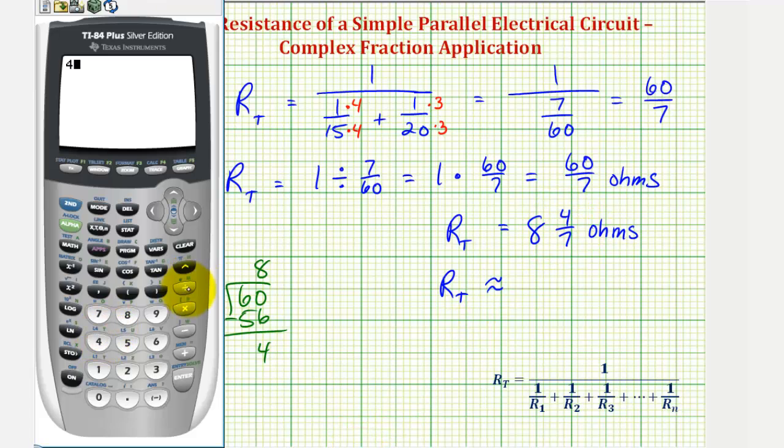Let's use the calculator and convert four-sevenths to a decimal. So four divided by seven. This would be approximately zero point five seven, which means the total resistance is approximately eight point five seven ohms.